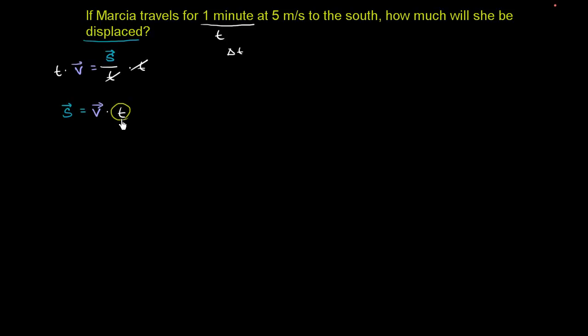So the 1 minute, so the t right over here is 1 minute at 5 meters per second to the south. This right over here is the velocity. They give us the magnitude, which is 5 meters per second, or you could say that's the speed. And they also give us the direction, to the south. So this right over here is 5 meters per second to the south.